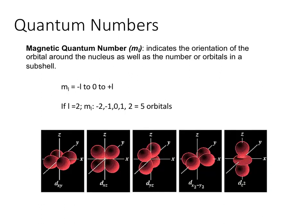The magnetic quantum number, M sub L, indicates the orientation of orbitals around the nucleus along the X, Y, Z axes, and tells you the number of orbitals in a specific subshell. M sub L is calculated by going from negative L to 0 to positive L. For L=2, M sub L gives negative 2, negative 1, 0, plus 1, plus 2 — five values.